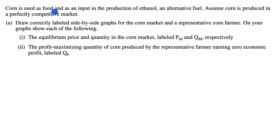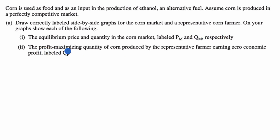We're told corn is used as food and as an input in the production of ethanol, an alternative fuel. Assume corn is produced in a perfectly competitive market. Draw correctly labeled side-by-side graphs for the corn market and a representative corn farmer, showing the equilibrium price and quantity in the corn market labeled P sub M and Q sub M, and the profit maximizing quantity of corn produced by the representative farmer earning zero economic profit labeled Q sub F.